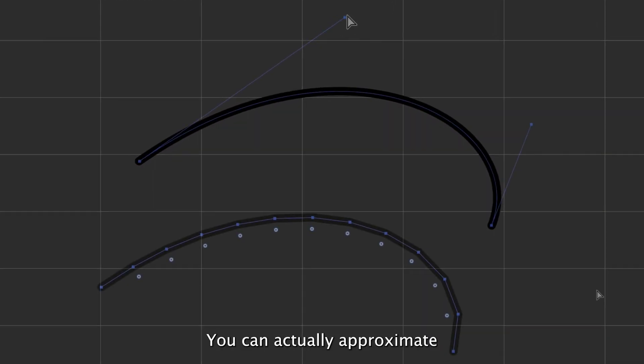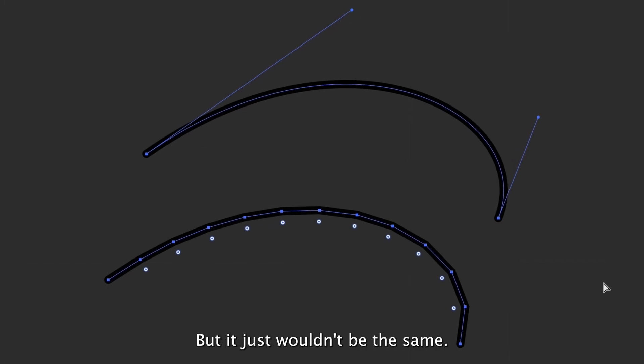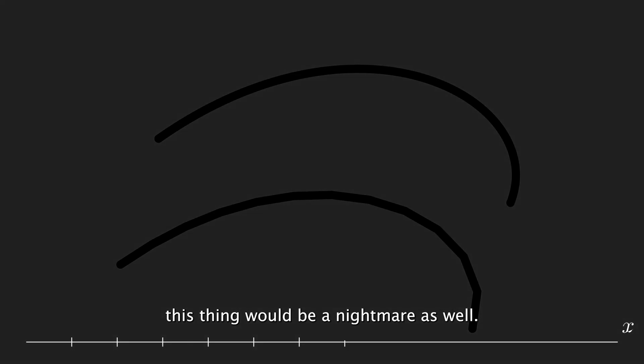You can actually approximate the same curve with a set of points and joining them with edges, but it just wouldn't be the same. It wouldn't be what is called in mathematics a continuous function. In normal people talk, that's what you'd call a perfectly smooth curve. Trying to edit this thing would be a nightmare as well.